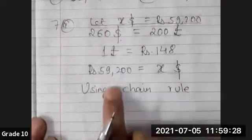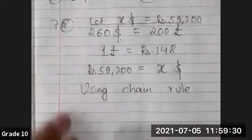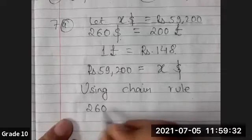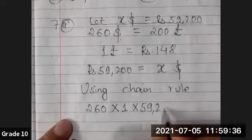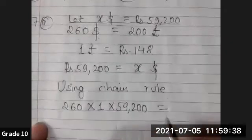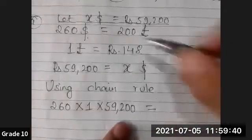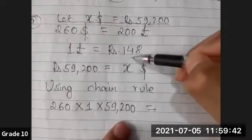Let's keep all the numbers on the left side as multiples: 260 times 1 times 59,200. And from the right side also, let's write all the numbers: 200 times 148 times x.